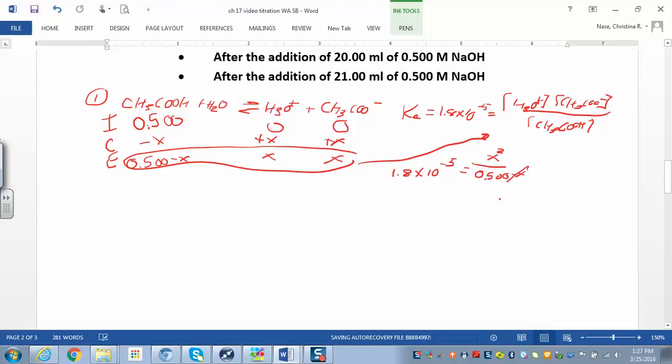So if we make that approximation, cancel that, multiply over. We have 1.8 times 10 to the negative 5 times 0.5 is equal to x squared. Take the square root of both sides. And solve for x. And when we work that out, what do you get for x? That's 3.0 times 10 to the negative 3. So that's equal to x, which is equal to our hydronium concentration. It's also equal to the acetate ion, but we're trying to find pH, so we really want to find the hydronium concentration.